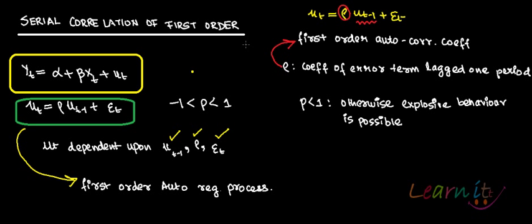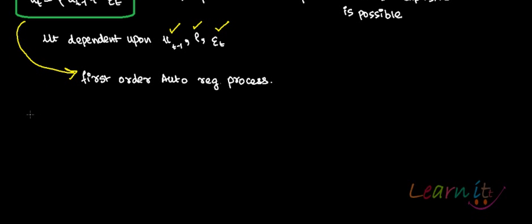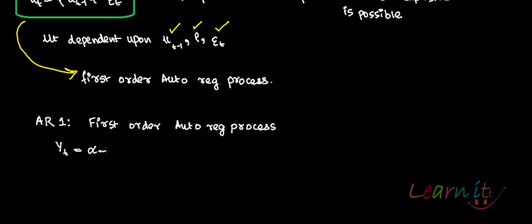We are gradually moving into serial correlation and autocorrelation — how to model autocorrelation. This is a brief introduction to serial correlation of the first order. The autoregressive process of first order, also called the AR1 process, is written as: yt equals alpha plus beta xt plus ut, where ut is dependent upon the error term in period t minus 1, with minus 1 less than rho less than 1.